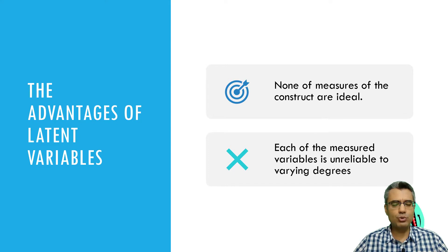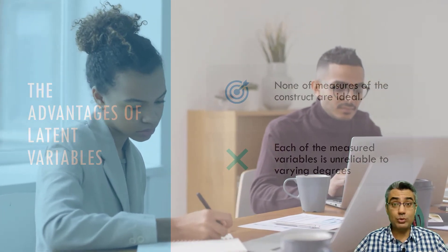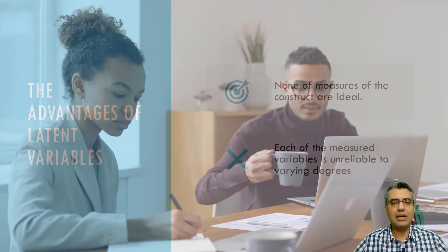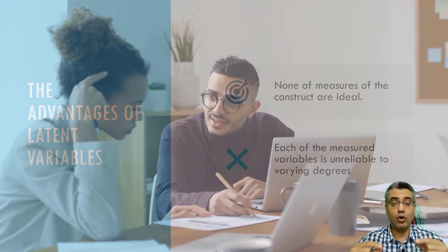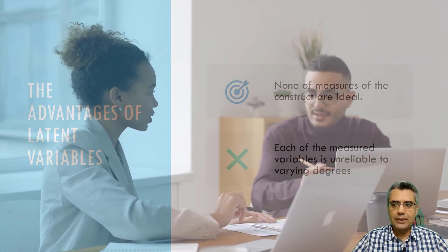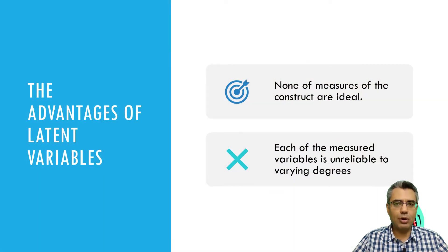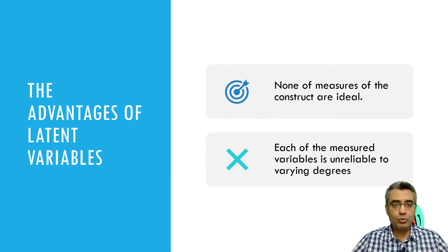For these types of variables in social sciences, we usually develop some items, questions, or measures — all synonyms. For example, for life satisfaction you may use an instrument with five questions, where each question is called an item, a measure, or an observed variable. We ask respondents to answer on a Likert scale of one to five, from strongly disagree to strongly agree, and these five questions together measure life satisfaction.